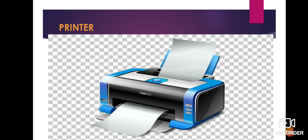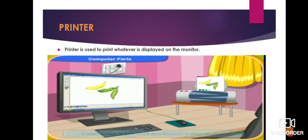First is printer. Look at the picture on your screen — this is how a printer looks like. Printer helps to print out a document on a sheet of paper. Printer is used to print whatever is displayed on the monitor. So whatever is there on your monitor, the printer prints that. For example, if you have written a poem, done a drawing, or completed some school work, just click the print button and the printer will write or draw all your work on paper and give it to you.